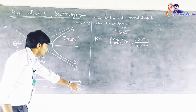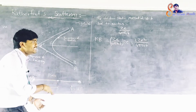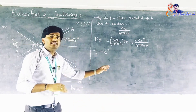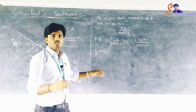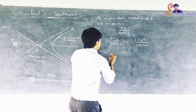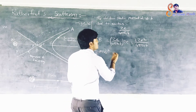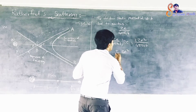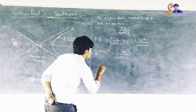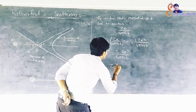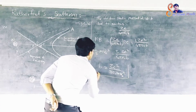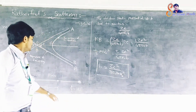When the alpha particle is momentarily stopped at a distance B, its kinetic energy ½Mv₀² is completely converted into its potential energy. So we can write ½Mv₀² is equal to 2Ze² by 4πε₀B. From this, the value of B is: B is equal to Ze² by πε₀Mv₀². This is the value for B when P is equal to 0.